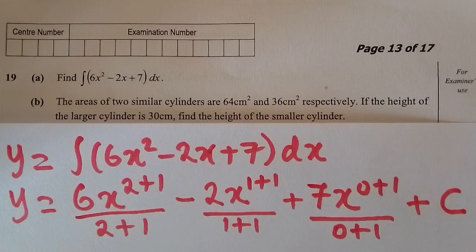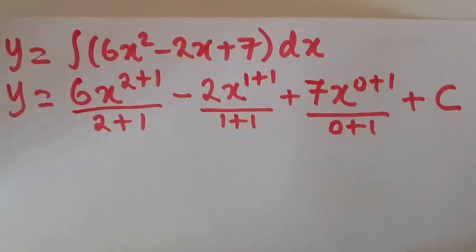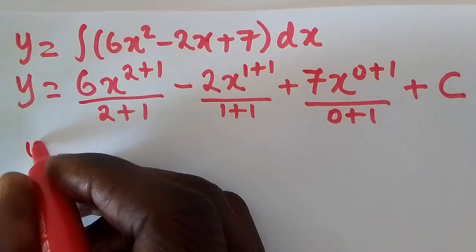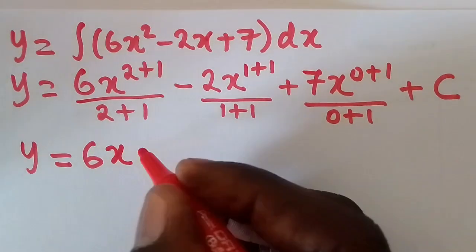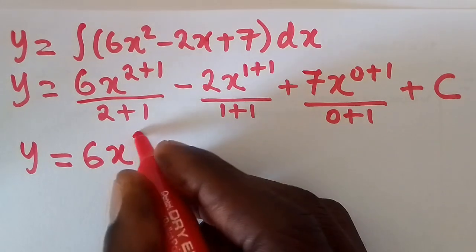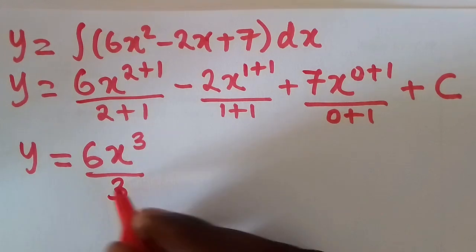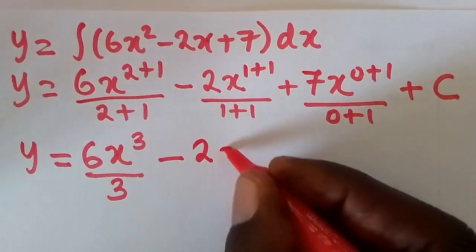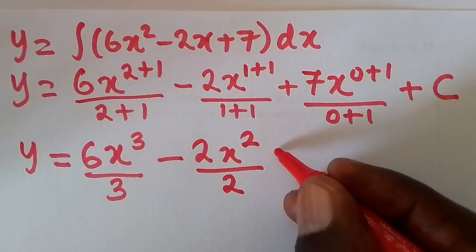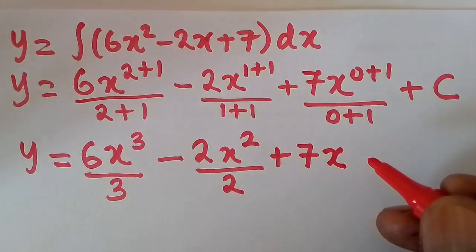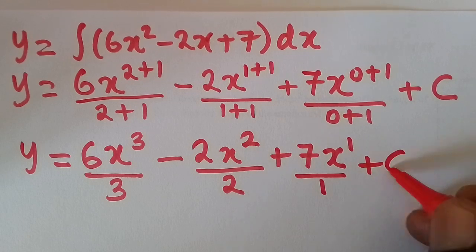In the next stage we work out the fractions. We write y equals: starting with 6, then x — since 2 plus 1 gives index 3 — over 3; then minus 2, x to the power 2 — since 1 plus 1 is 2 — over 2; then plus 7, x to the power 1 — since 0 plus 1 is 1 — over 1; then plus c.